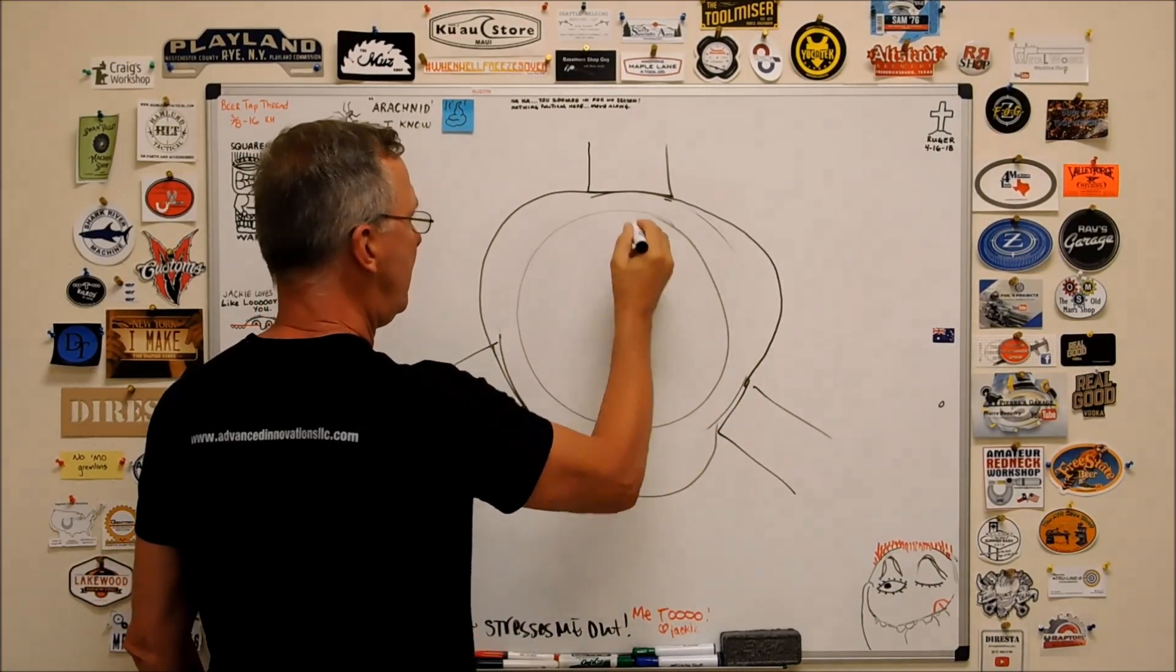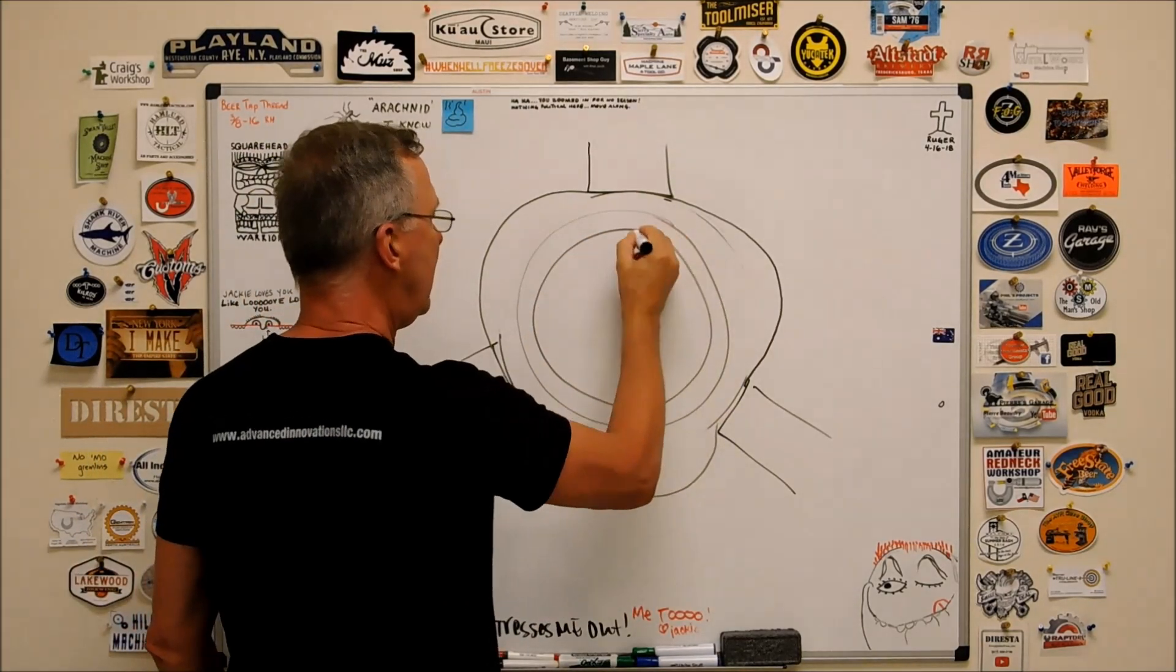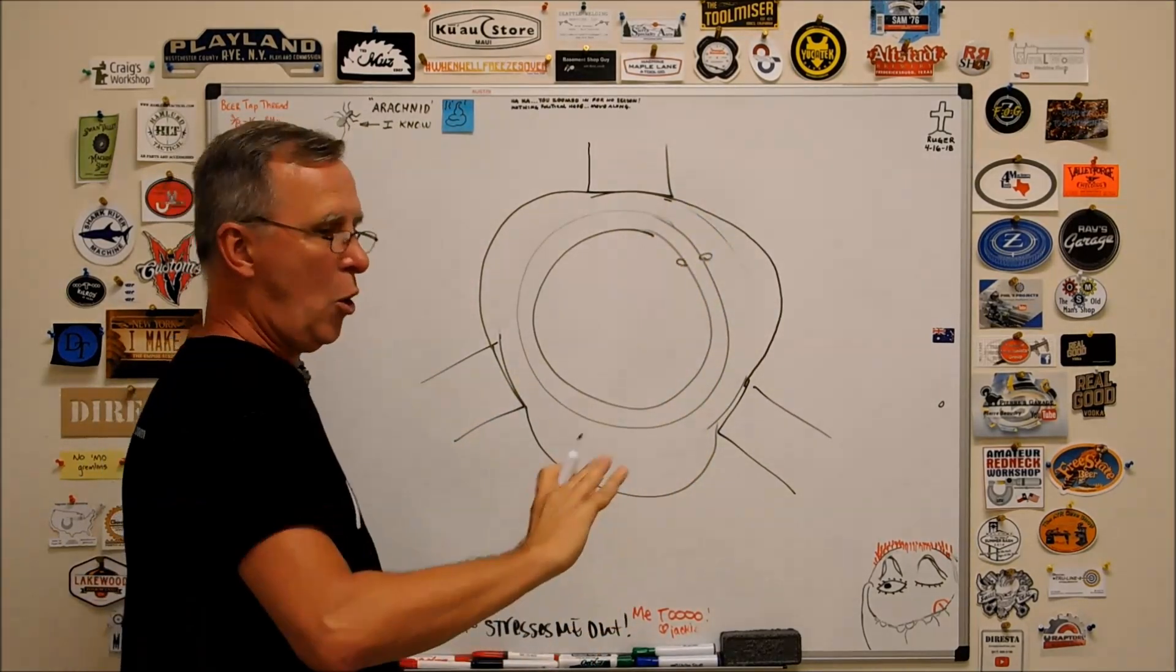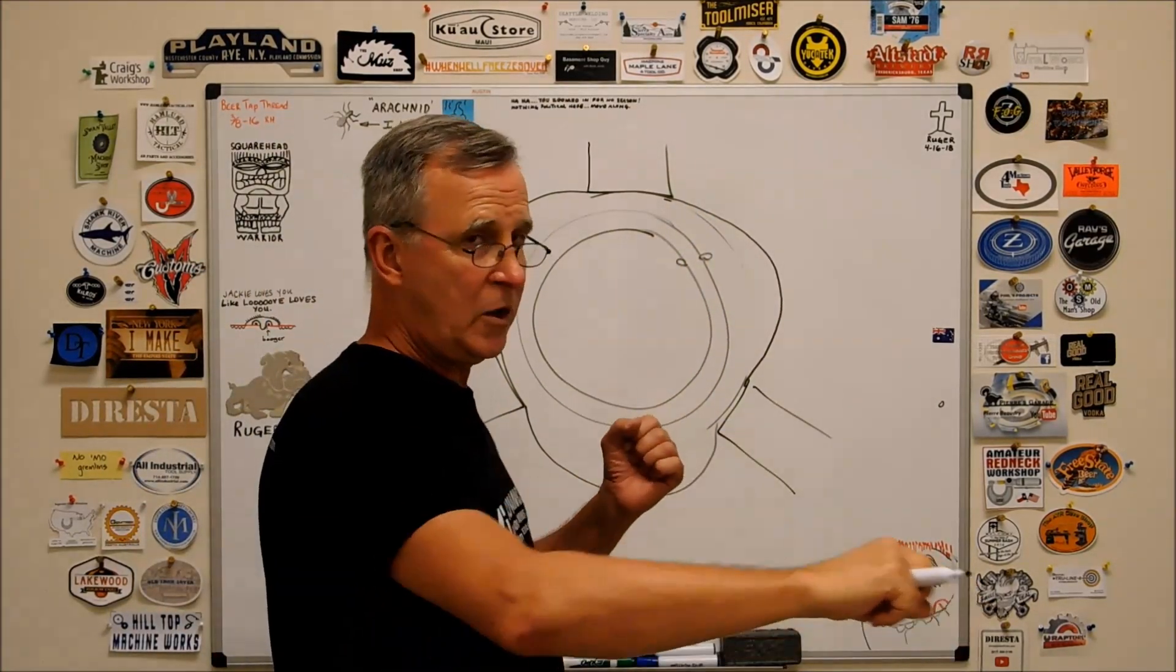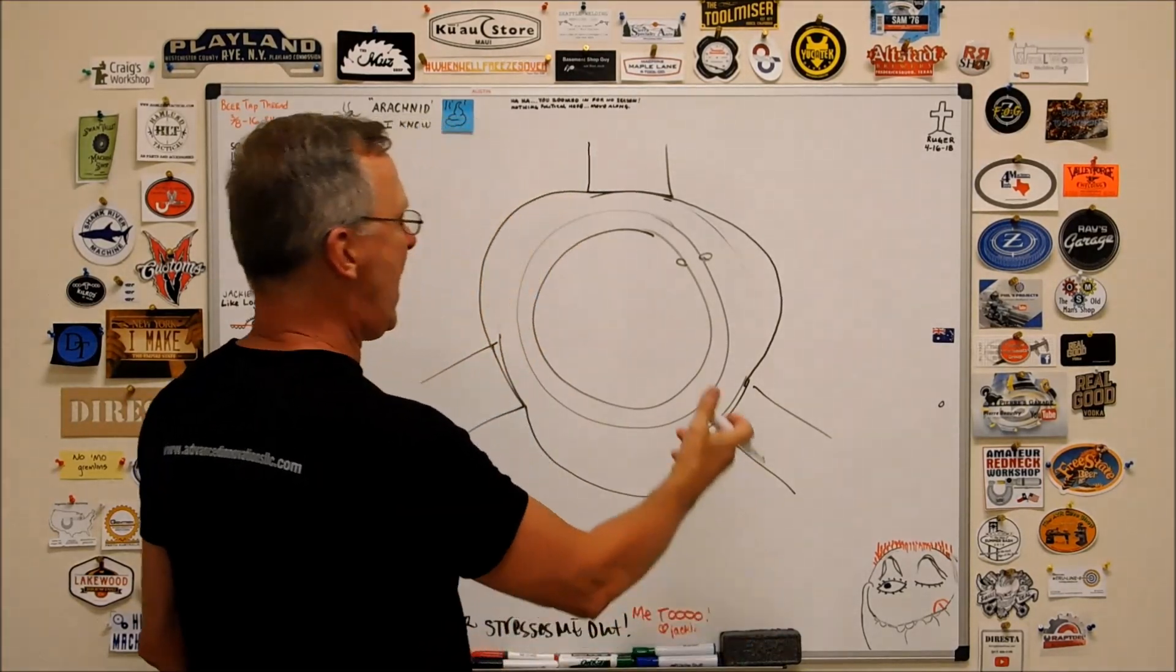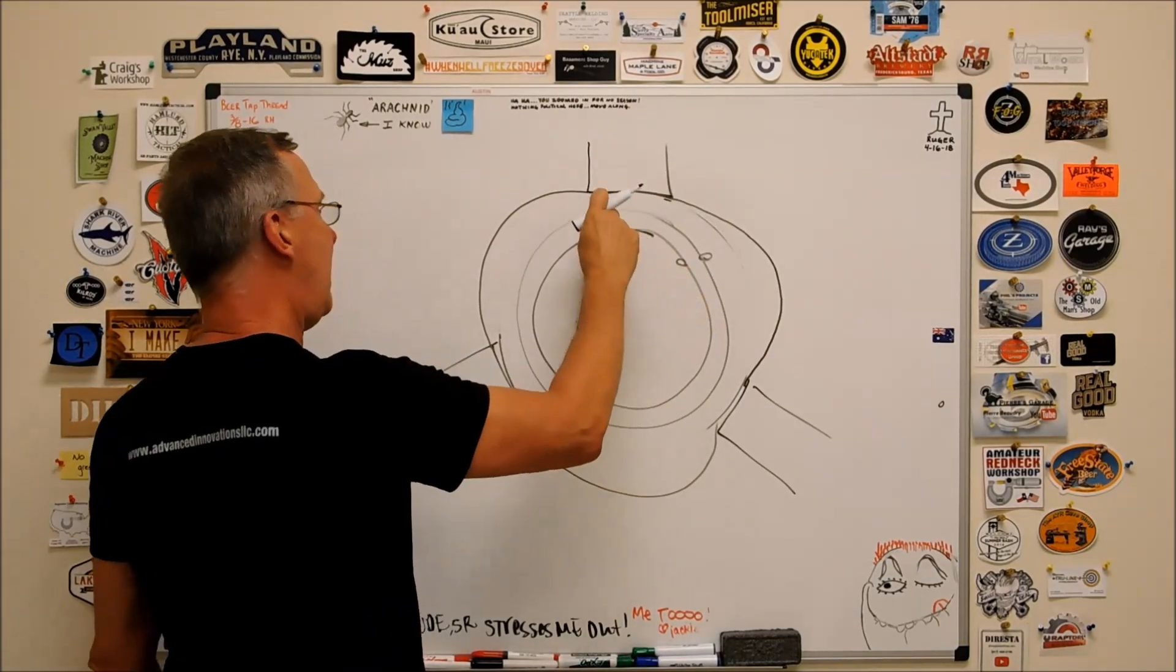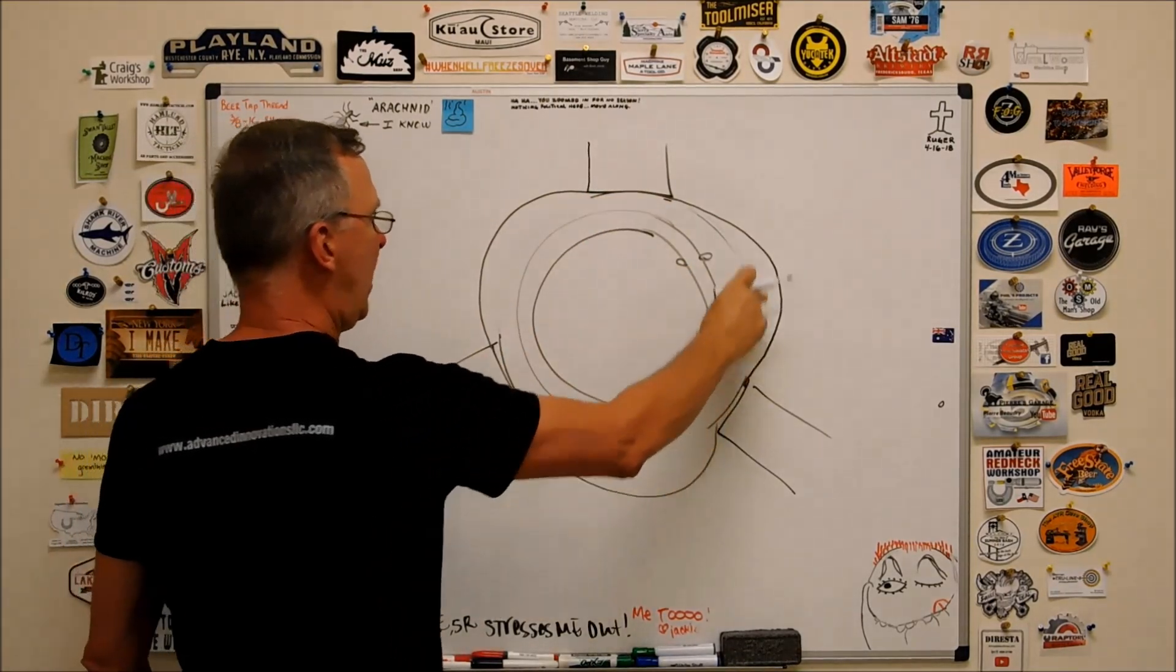you do your boring, and you can create a round part under these circumstances. Not a problem. We're going to turn it. It's going to be round. We're going to bore it. It's going to be round. This is going to be concentric to this. All is well. You unloosen the chuck. There it is.